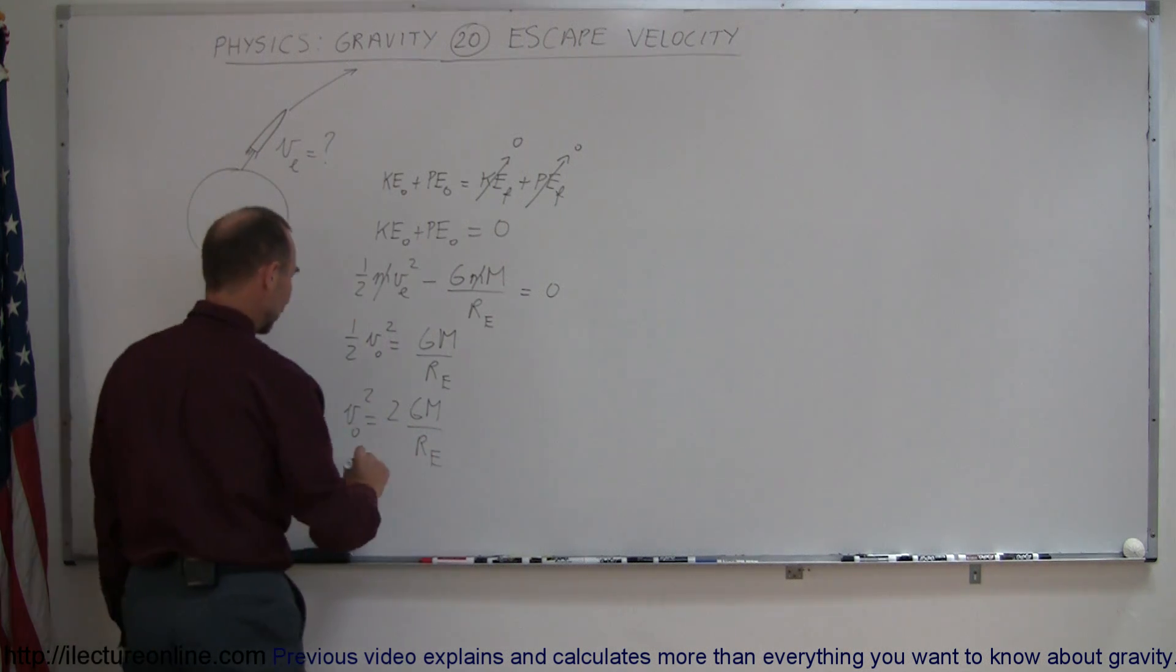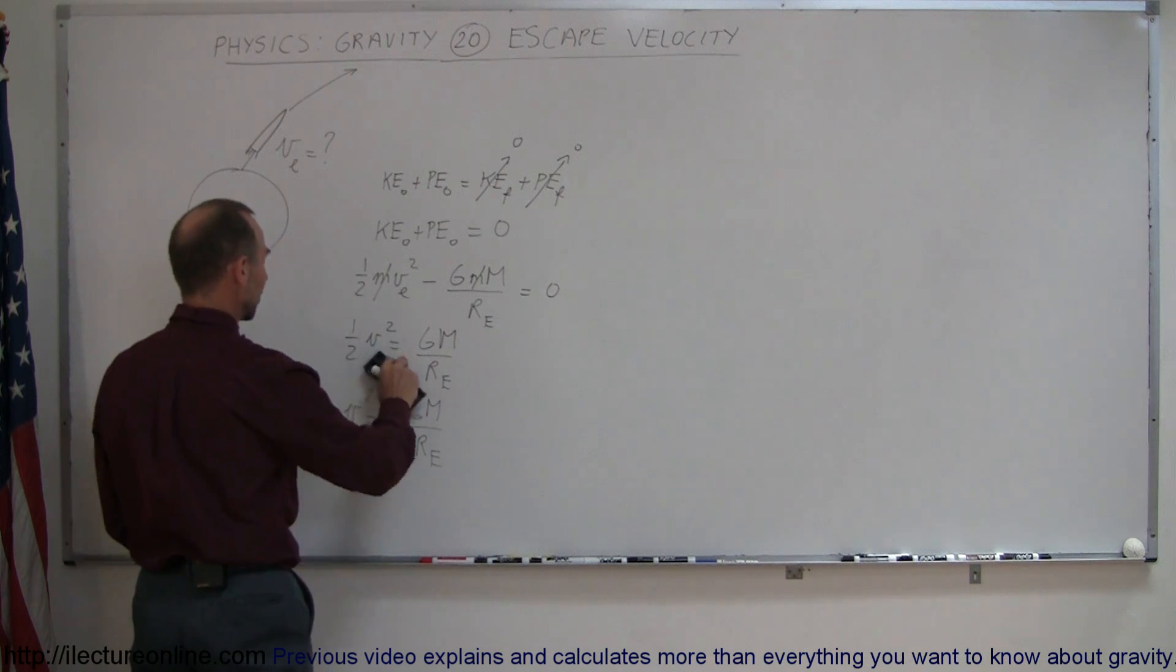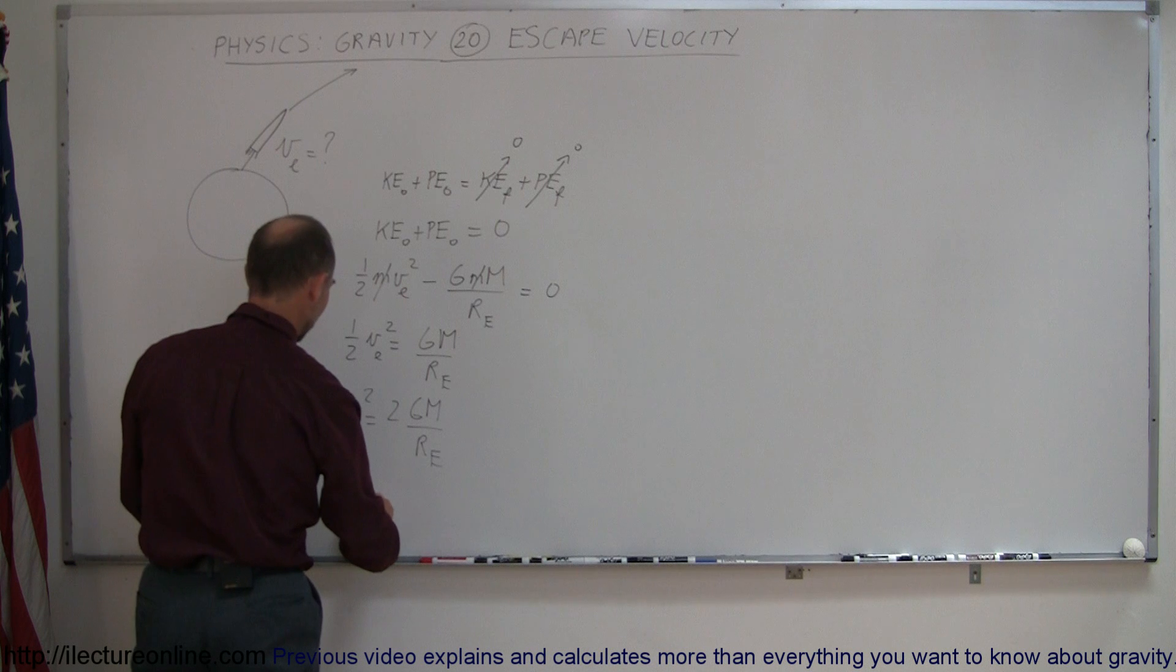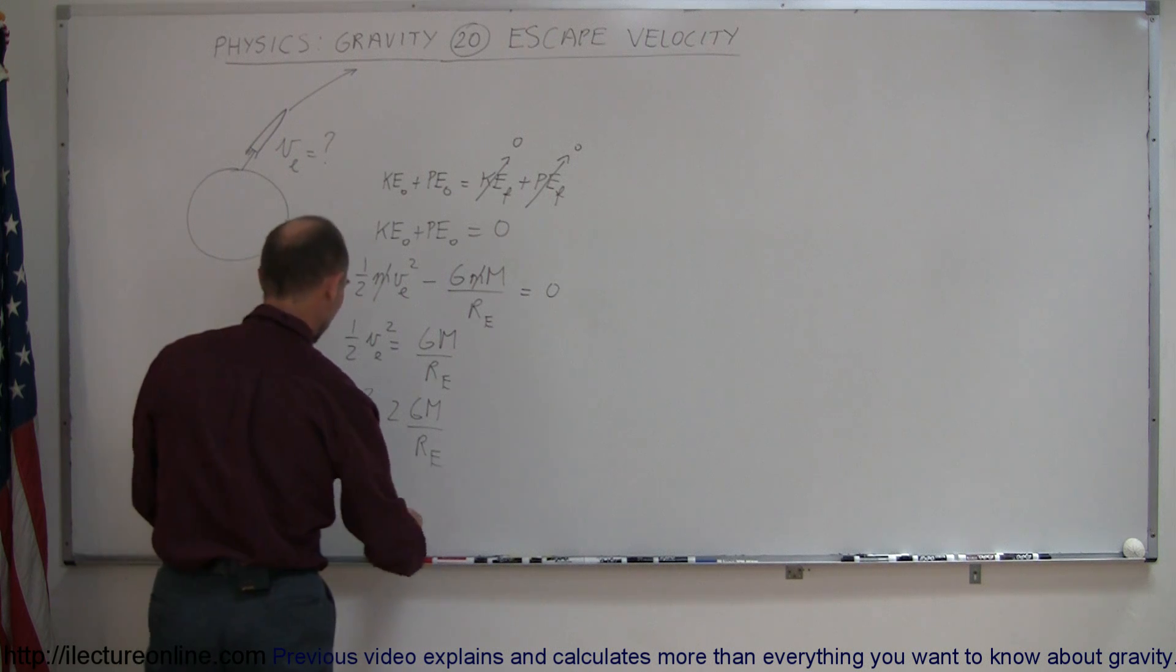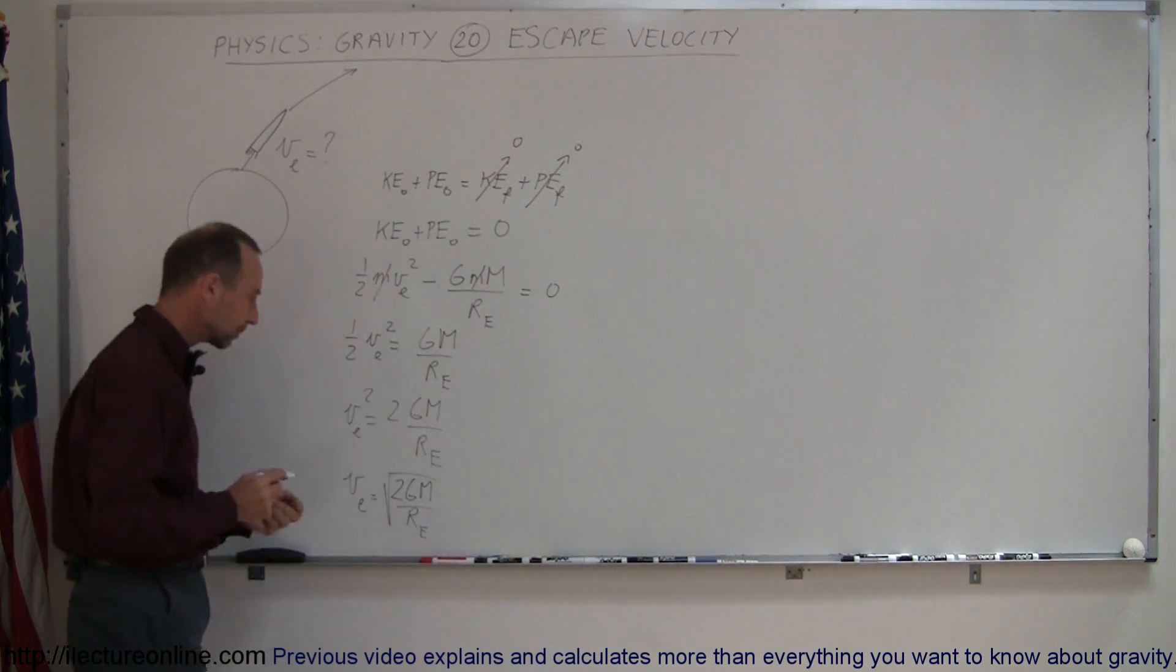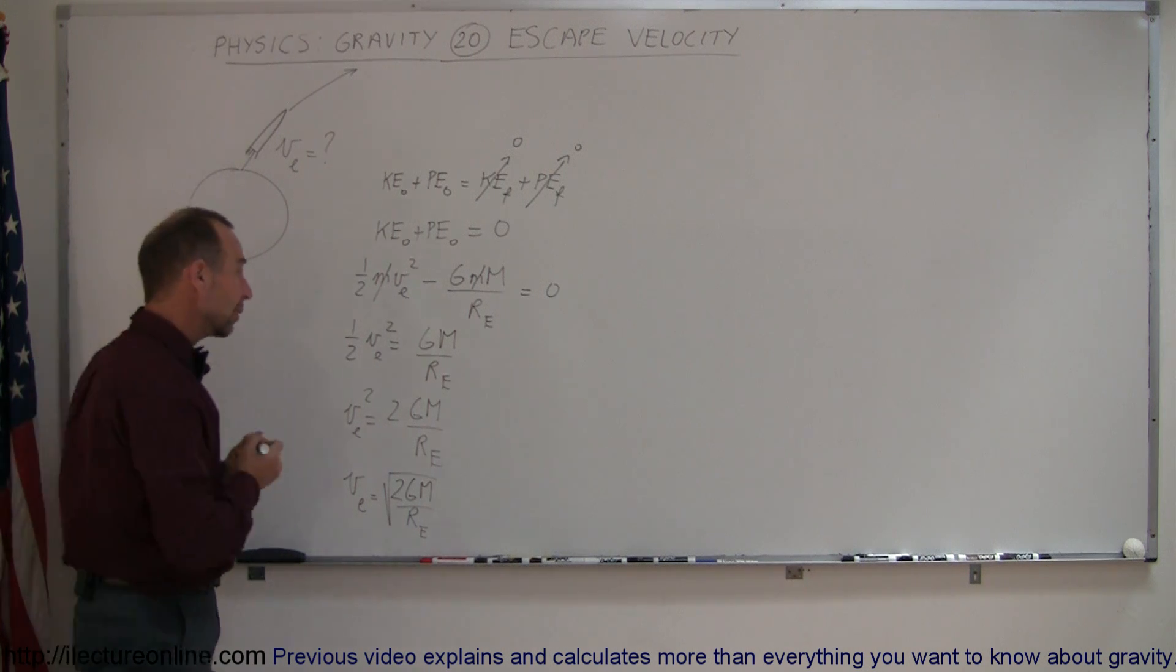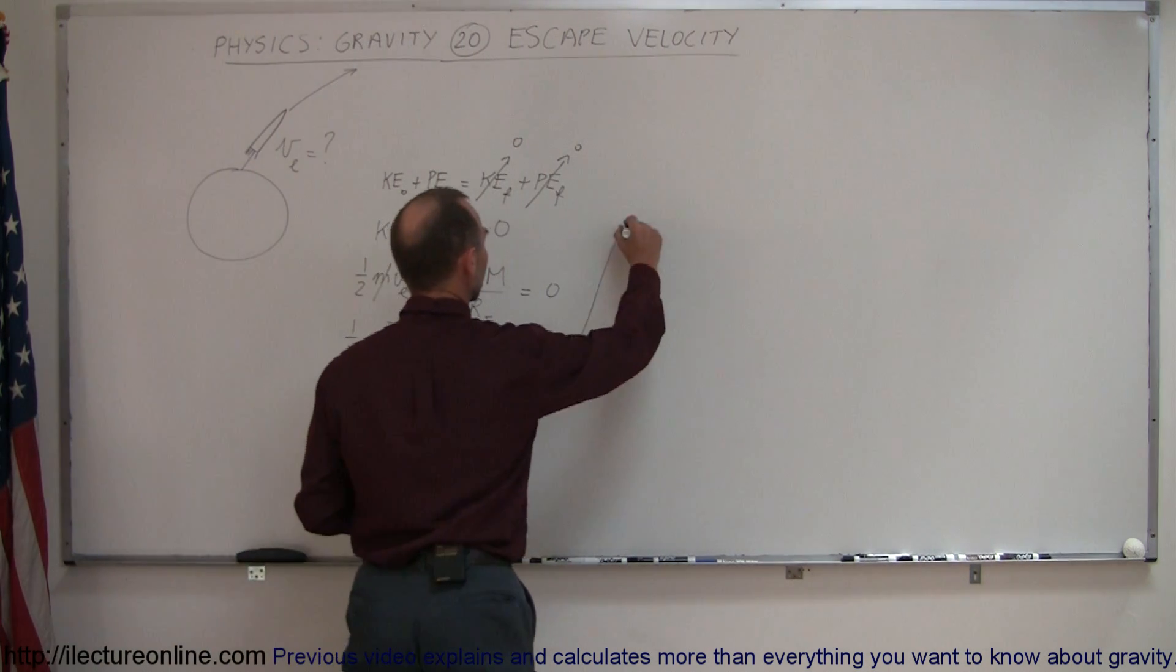And finally, when we take the square root of both sides, we can see that v sub e, the escape velocity, is equal to the square root of two GM over the radius of the Earth. Now, I noticed something here. Let me rewrite this and maybe you see it as well. If I now take the escape velocity is equal to the square root of two times the square root of GM over the radius of the Earth.